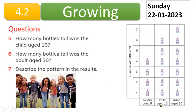How many bottles tall was the child age 10? Look at age 10 — there are six children at age 10, so we put six bottles. How many bottles tall was the adult at age 30? There are seven people at age 30, so the answer is seven.